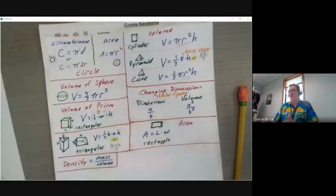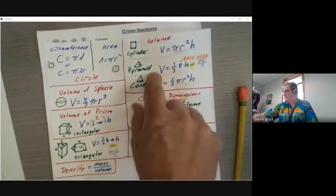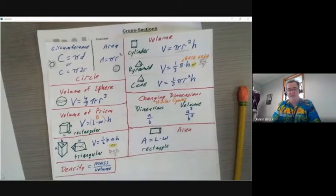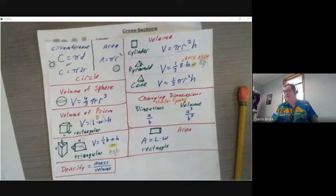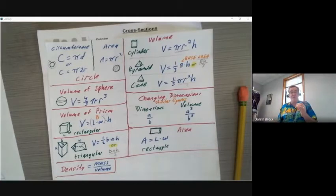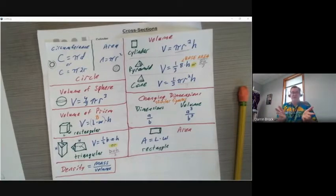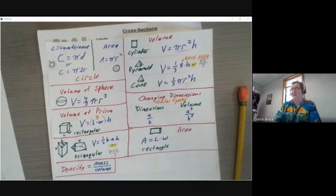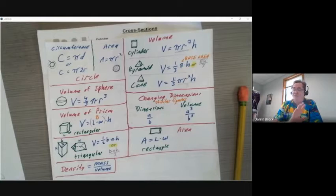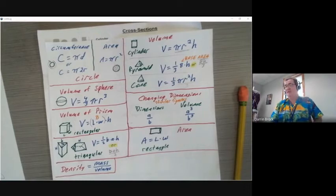For part one, you'll have problems that use these formulas — it'll give you dimensions and ask for the volume of a cylinder, pyramid, or cone. Generally in Buzz, it'll tell you when to use 3.14 for pi instead of the pi button, because the multiple-choice answers were calculated with 3.14. On Delta Math, if it doesn't say to use 3.14, use the pi button on your calculator for a more precise answer.